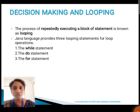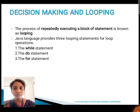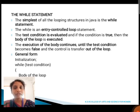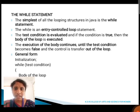Next, we are going to see about decision making and looping. The process of repeatedly executing a block of statements is known as looping. Java language provides three looping statements: the while statement, the do statement, and the for statement. The while statement is the simplest of all looping structures in Java. While is an entry control loop statement. The test condition is evaluated, and if the condition is true, the body of the loop is executed, and this continues until the test condition becomes false, transferring control out of the loop.